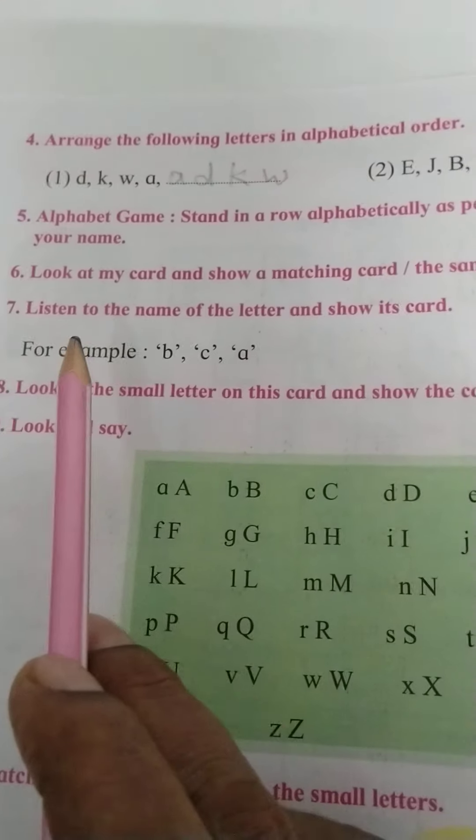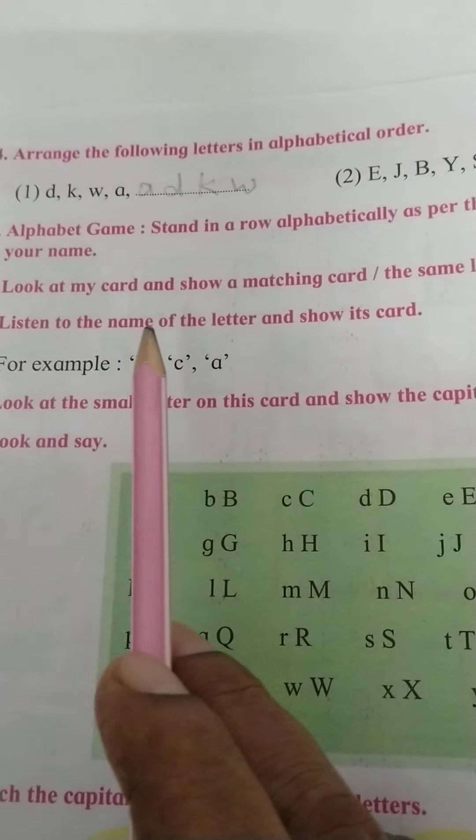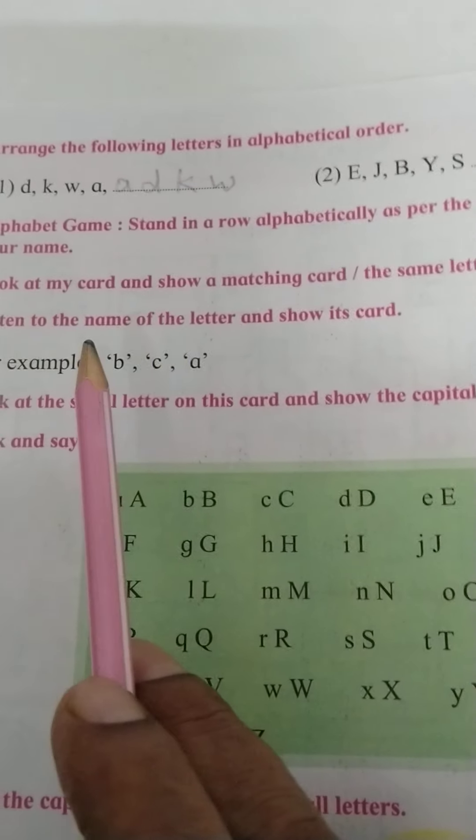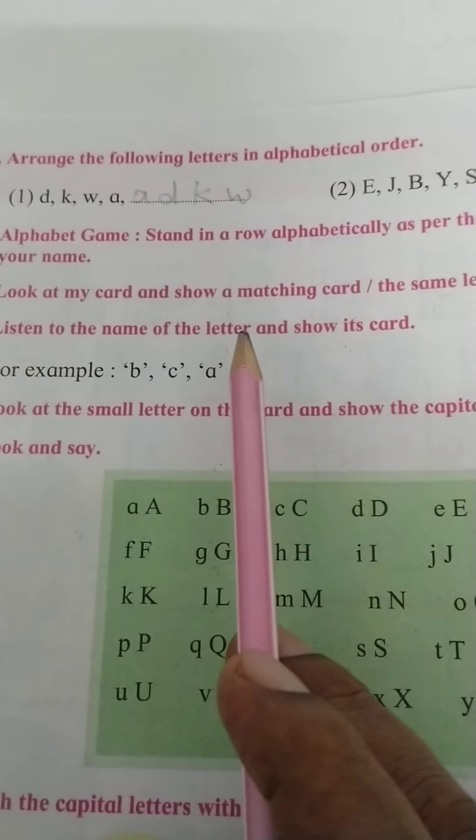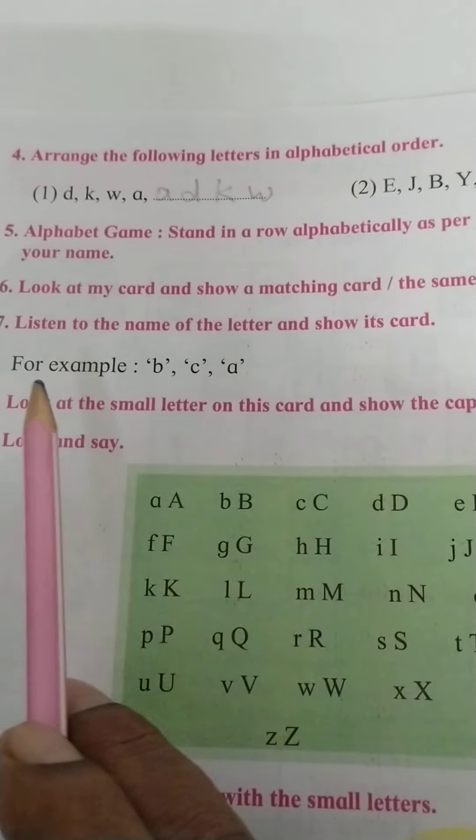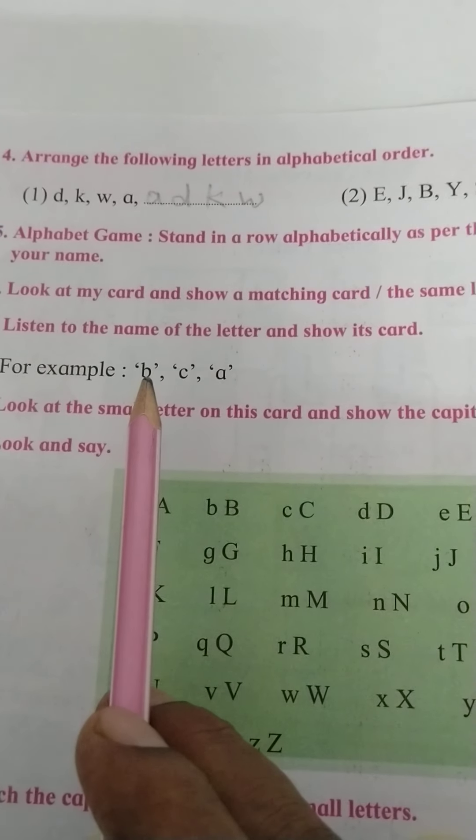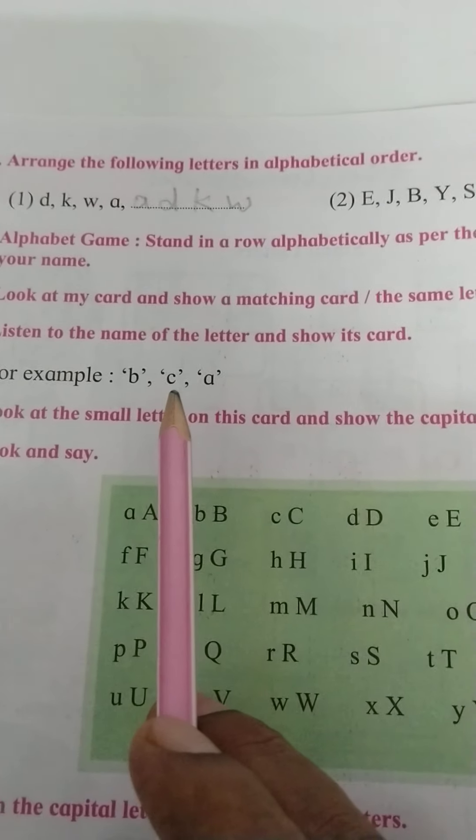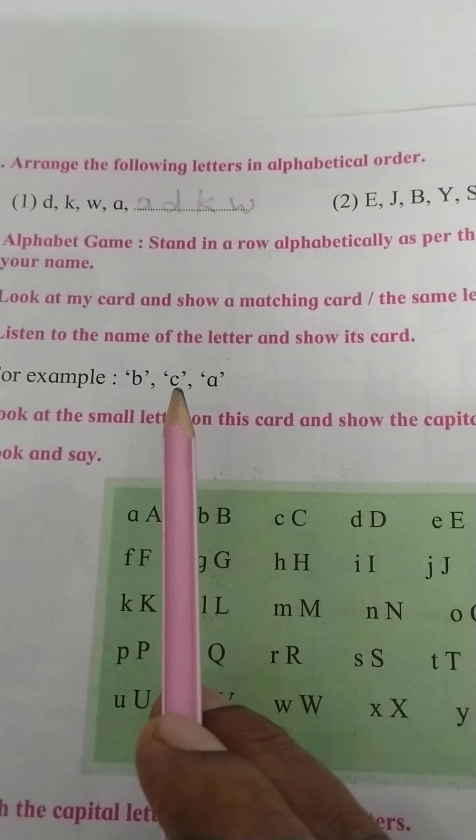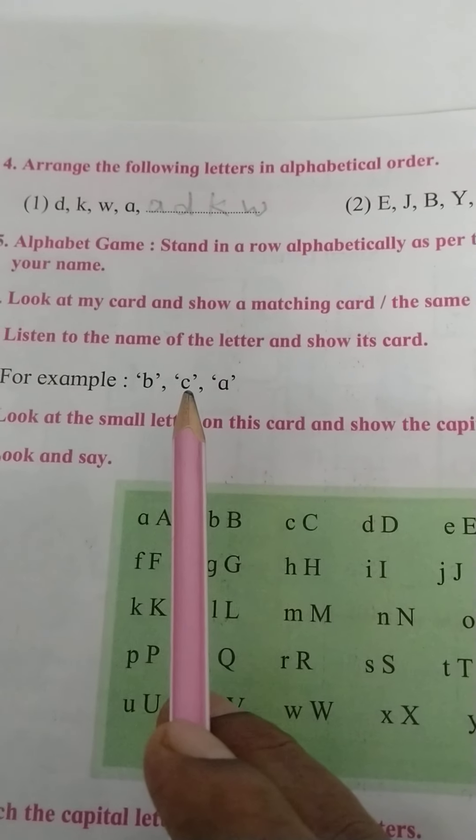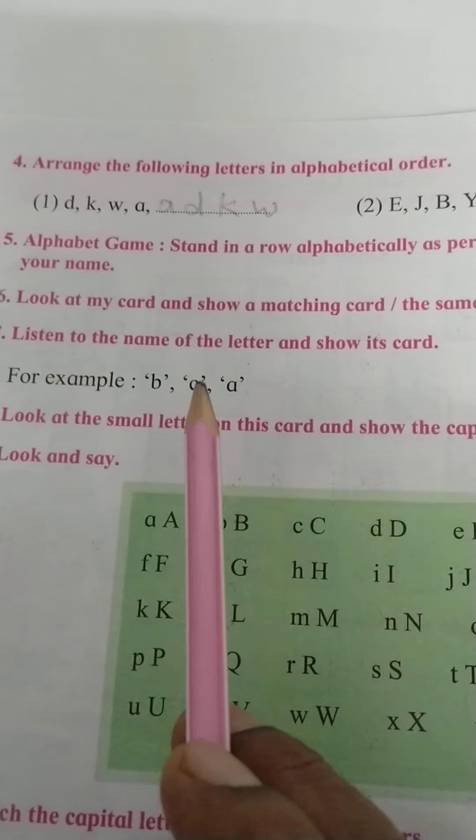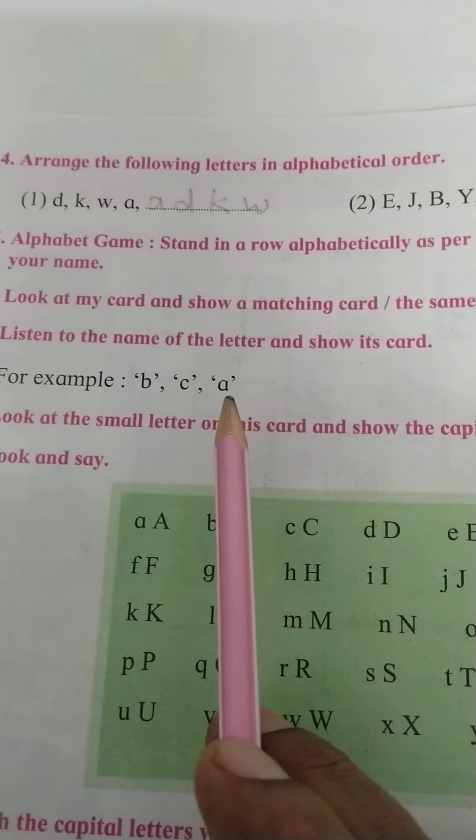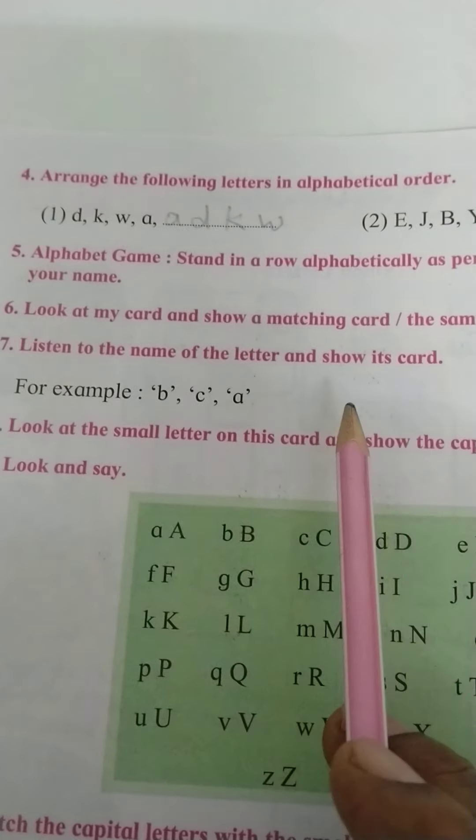Next, point number 7: listen to the name of the letter and show its card. When we say the letter, you have to show the card. For example, b - when we say b, you have to show the card b. When I say c, you have to show the card c. When I say a, you have to show the card a in this way.